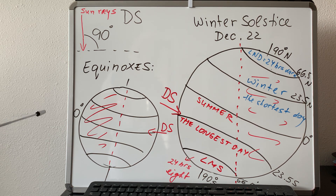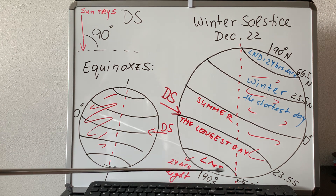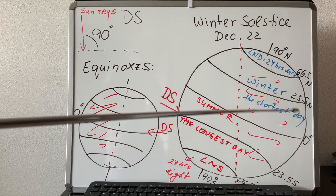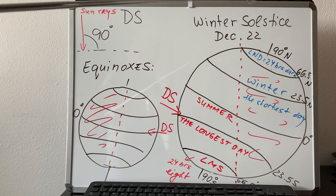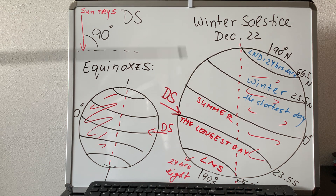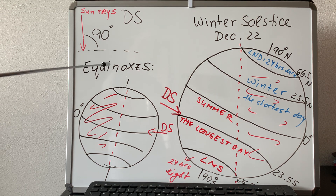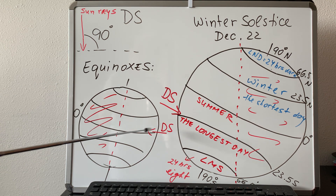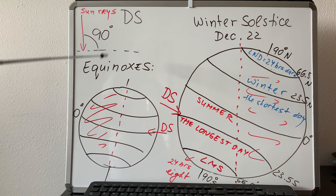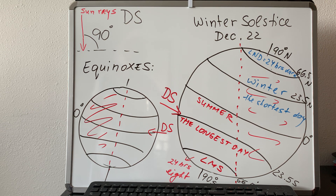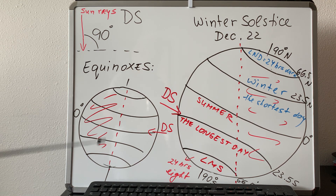Let's start with equinoxes — they're very simple. You always have to label the important lines with their latitudes: the equator is 0 degrees, then the tropics at 23.5 degrees north and south, then the Arctic and Antarctic circles at 66.5 degrees north and south, and the poles at 90 degrees north and south. By equinoxes, the direct sun is on the equator, at a right angle with it. The circle of illumination is the boundary between the light and dark parts of the planet, and it cuts the Earth into two equal halves through the poles.